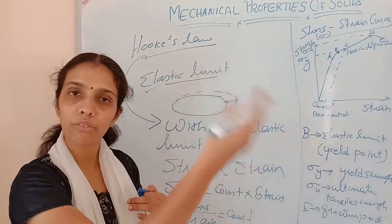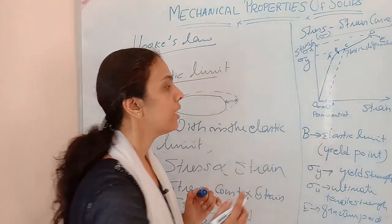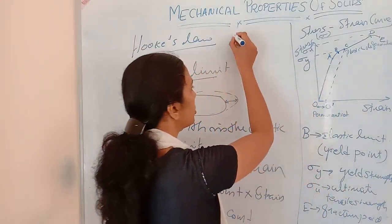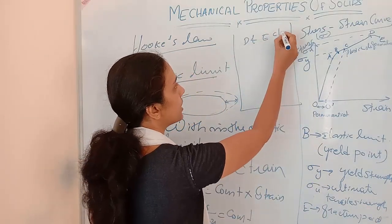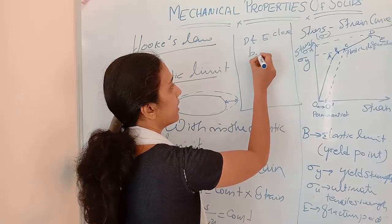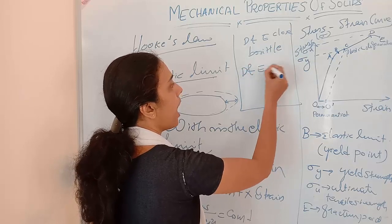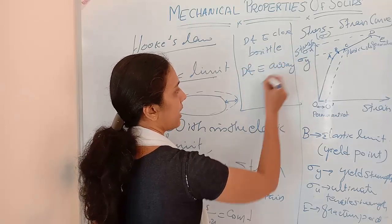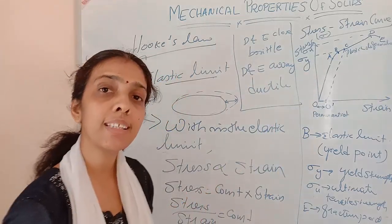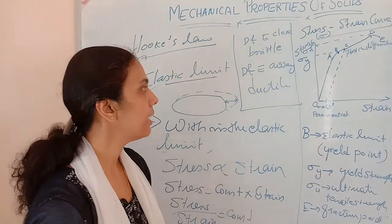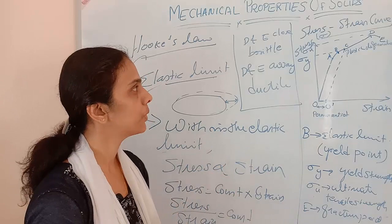After the elastic limit we call it plastic deformation. If D and E are very close to each other, then we can say that object will be brittle. If D and E are away from each other, then we can say it is ductile. Brittle means it will break fast; ductile means it will take time, it won't break that fast. The stress-strain curve is very important.